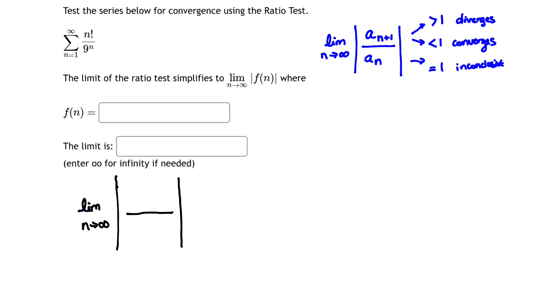Looking at my original formula, I have that a sub n is just the term n factorial over 9 to the n. So in the bottom, I'm going to put n factorial over 9 to the nth power. And in the numerator, I'm going to take a sub n plus 1, which is just n plus 1 factorial over 9 to the n plus 1.